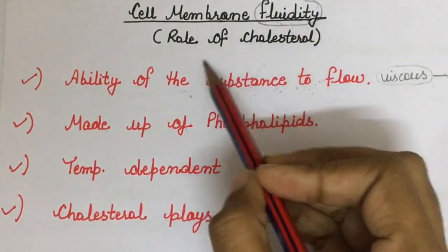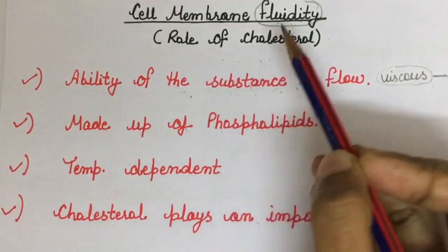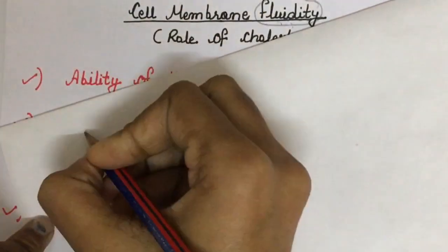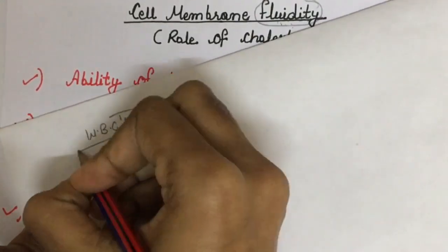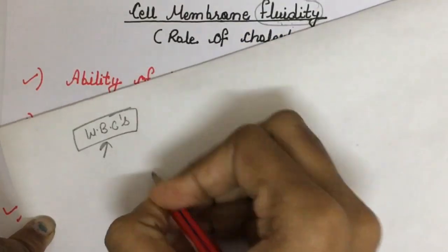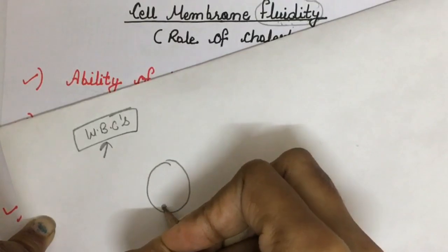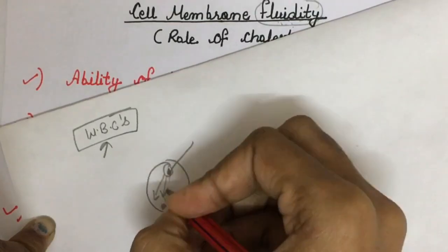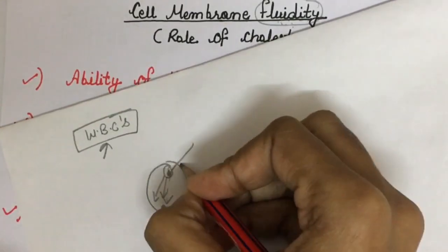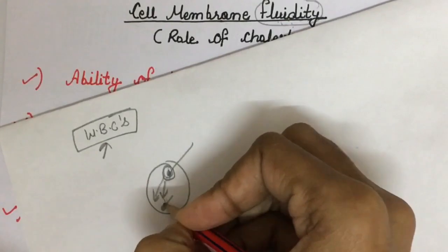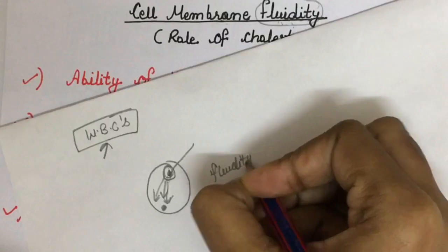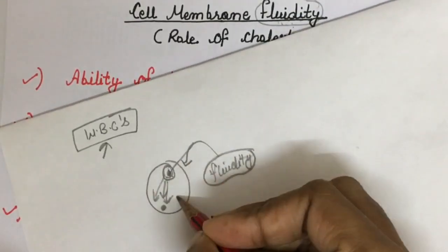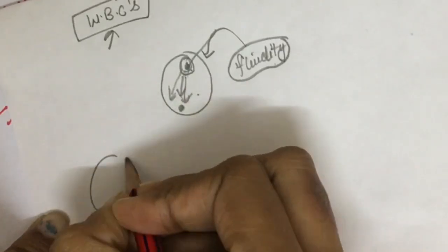Why is fluidity important? For cell signaling, for the development of the embryo, for the movement of RBCs and WBCs, and for drug delivery, fluidity is very much required. WBCs make up the defensive system of our body, so if infection is happening, WBCs need to migrate from one place to another. If their cell membrane is not fluid, they will not be able to move freely.